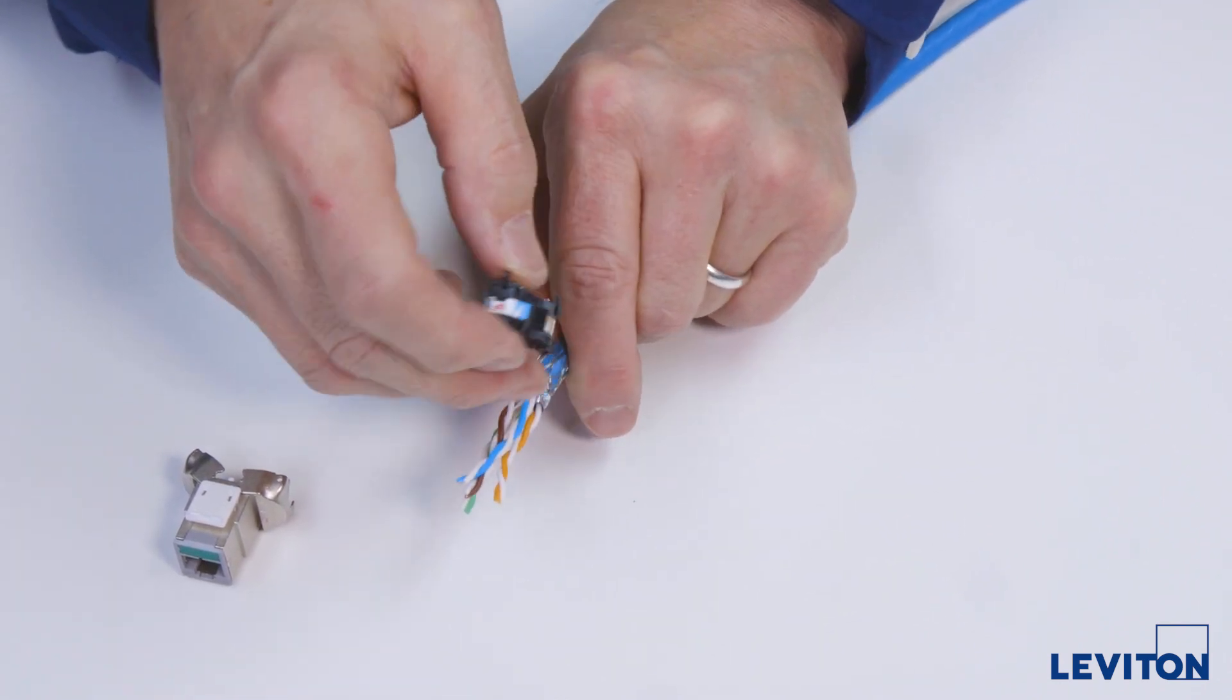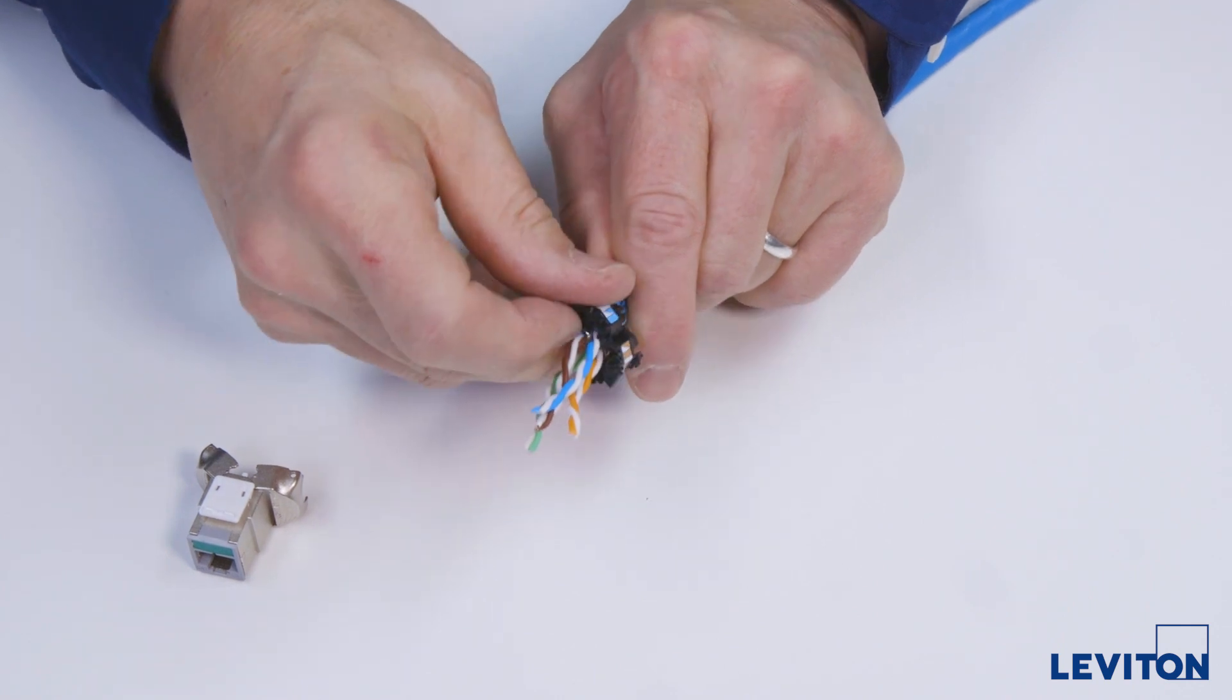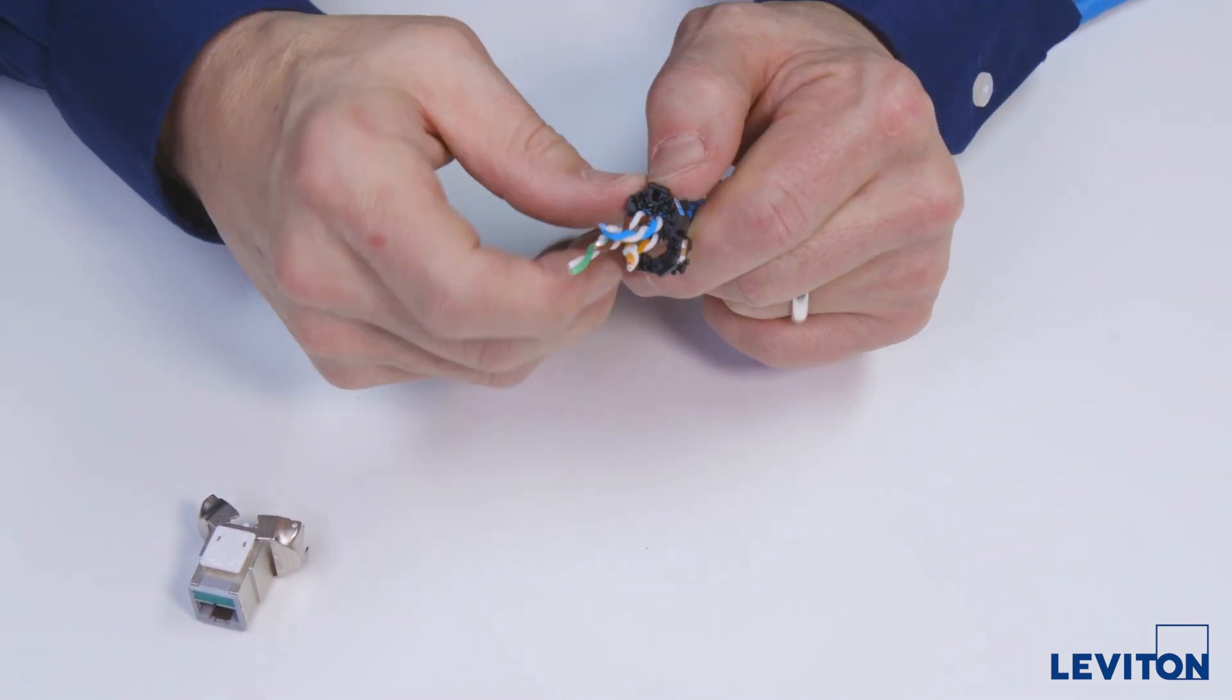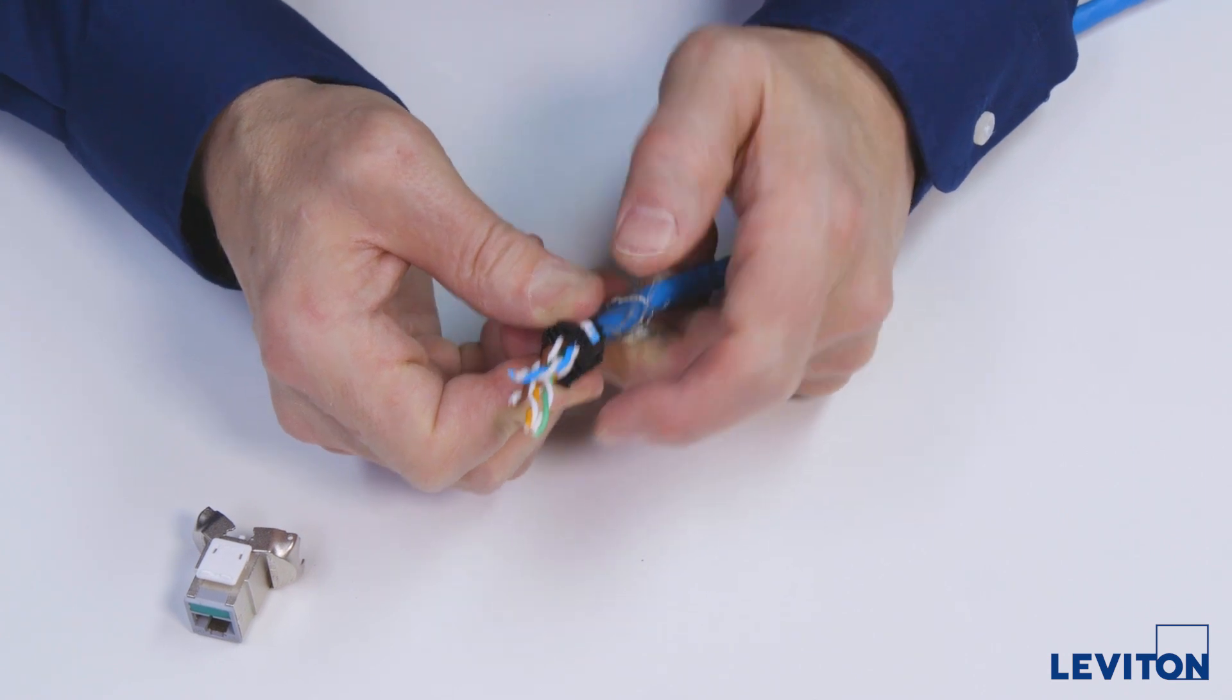Once again, you will line up the blue label to the blue pair. Make sure the cable stop post is slightly above the strip point of the cable and snap the wire manager shut.